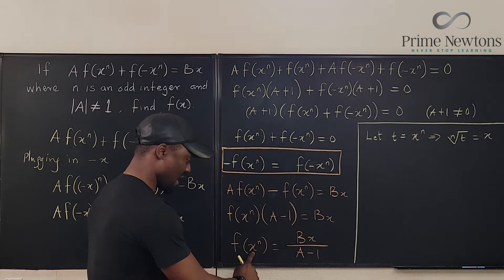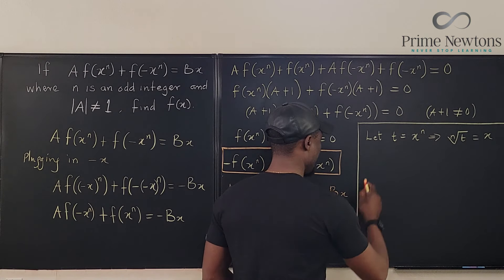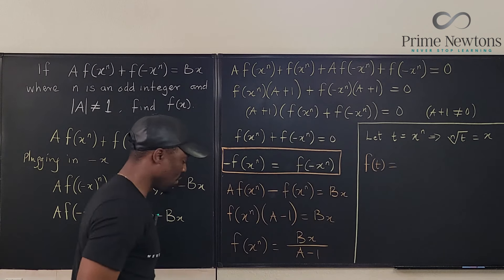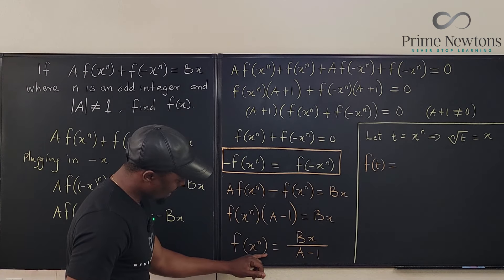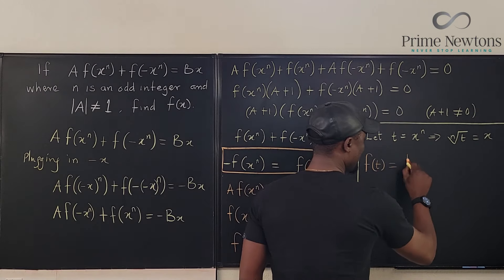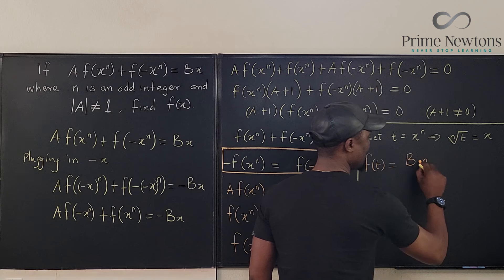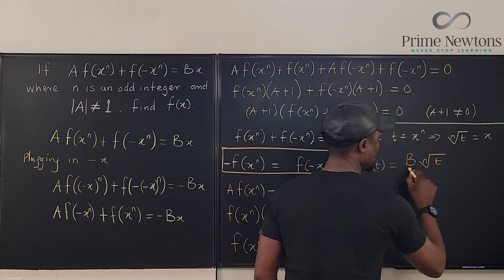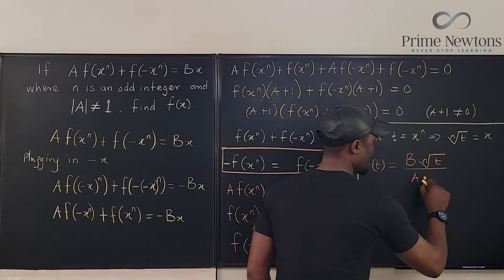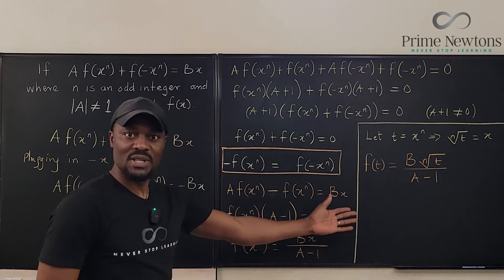So I'm going to go here and say f(t), let's go back and say f(t) will be equal to bx. What is x? x is the nth root of t divided by A minus 1. We're done.